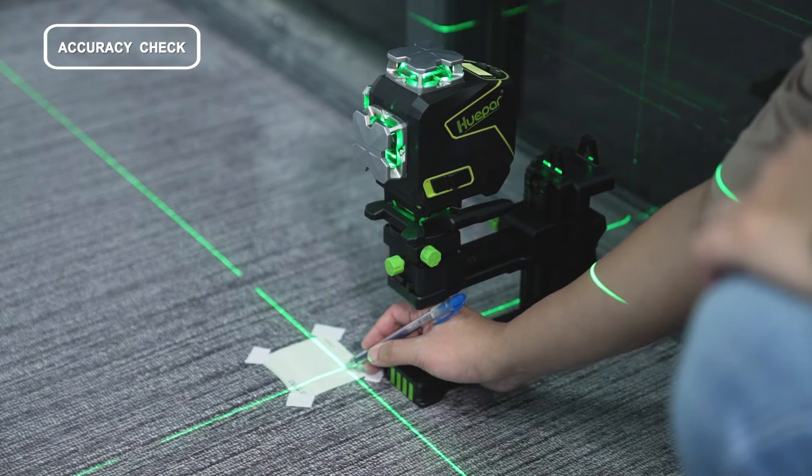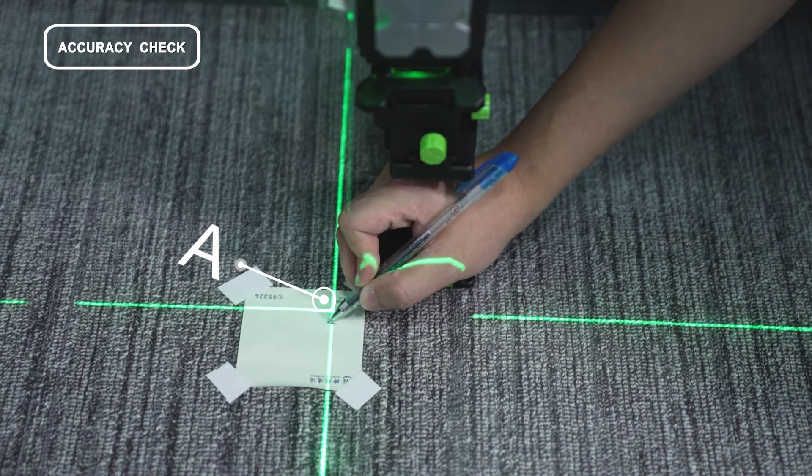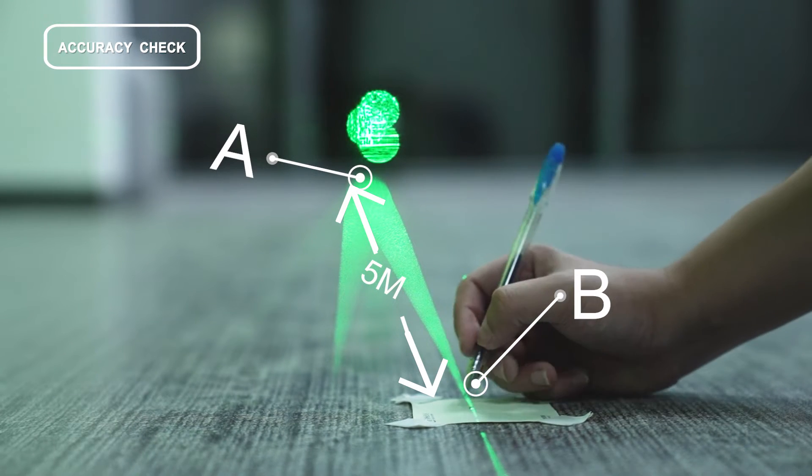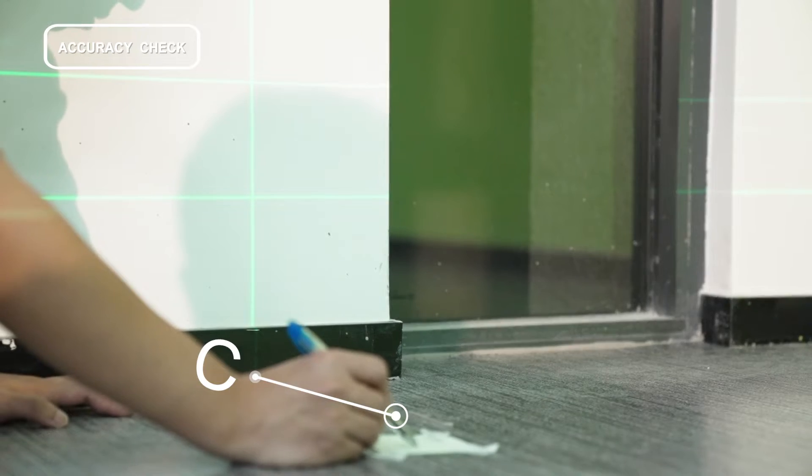Turn on the side vertical laser beam. Mark A below the laser tool on the floor, then mark B on the floor 5m away from mark A, and finally mark C on the floor 5m away from mark B.